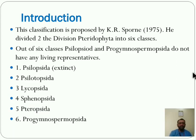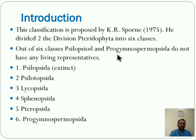In this part, we are learning about the introduction. Let us see what is the outline of classification. This classification is proposed by K.R. Sproul in 1975, and he divided the division Pteridophyta into six major classes.